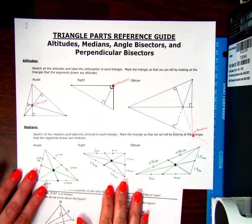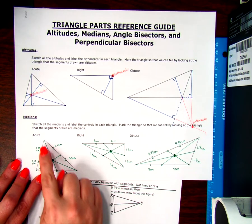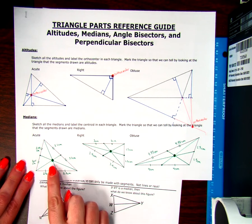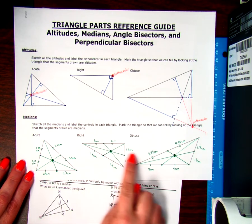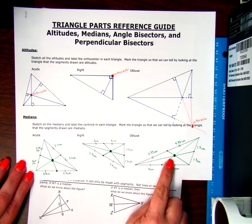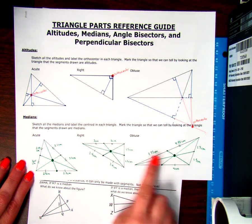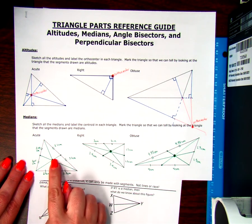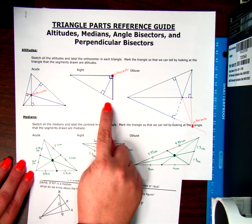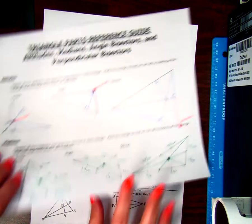Alright, in the last video, we practiced drawing some medians from the corner to the midpoint so that we could find that our centroid was always in the center, or inside the triangle no matter what type of triangle we had, which is different from what we found when we did the altitudes.